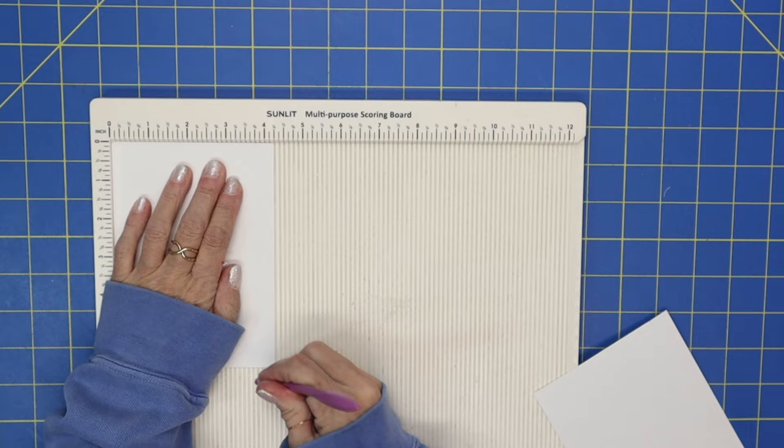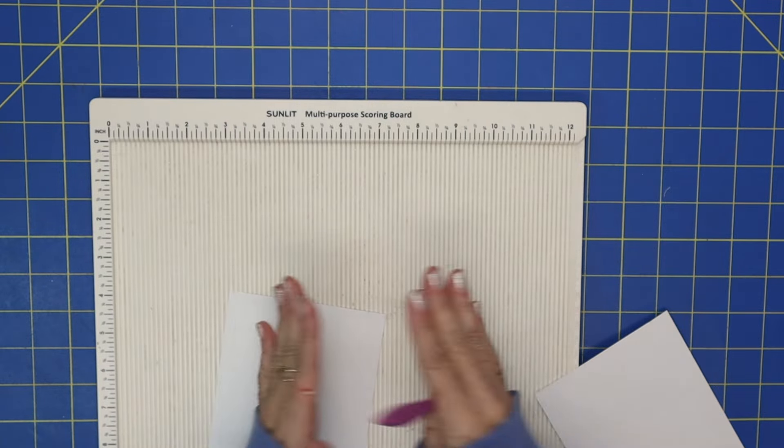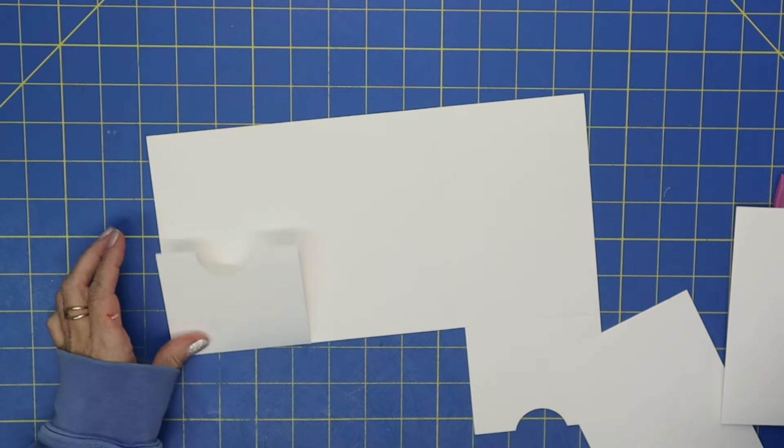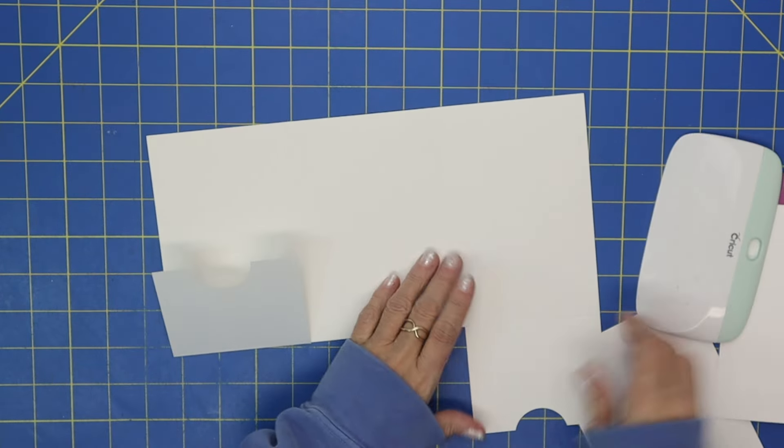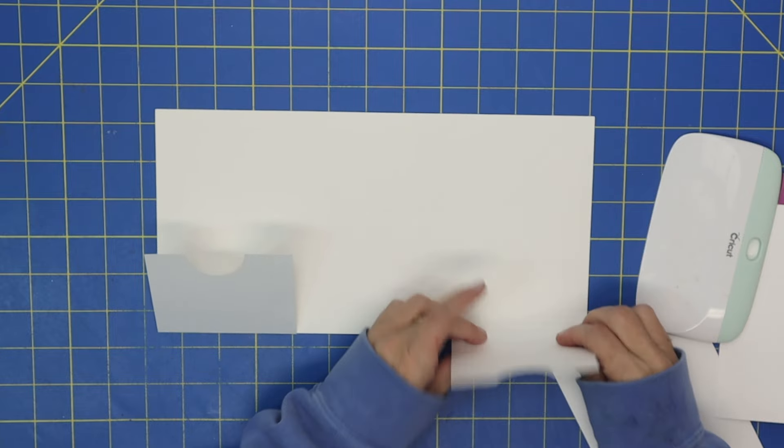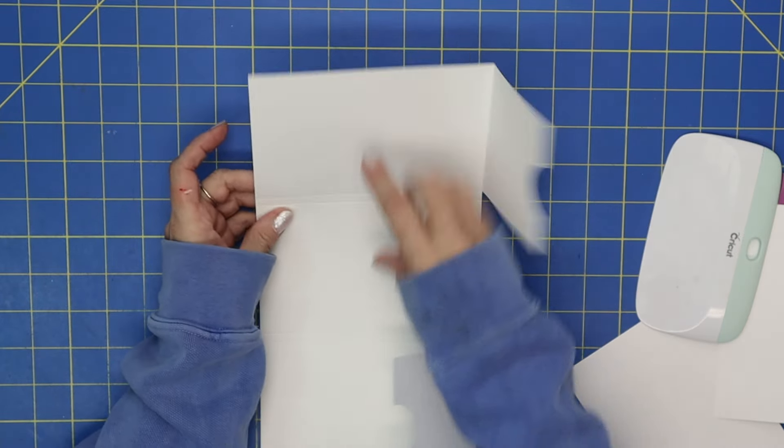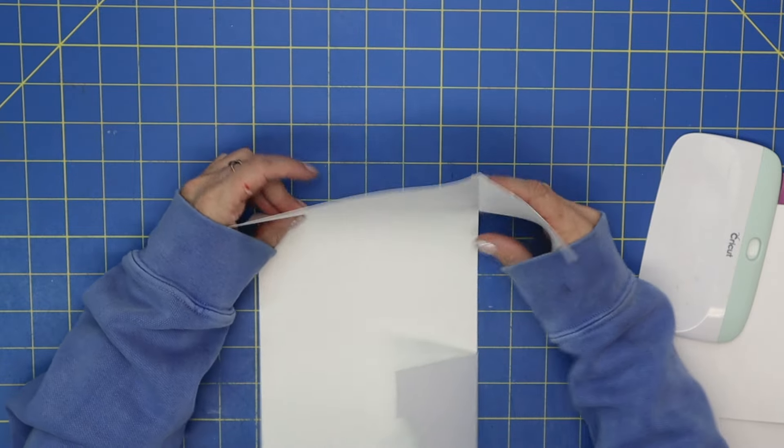So on the 4.5-inch side you want to score it at 3 and 3/4. This is going to be our flip-out pages. Okay, I'm going to go ahead and bring my base in and I'm going to fold on those score lines.